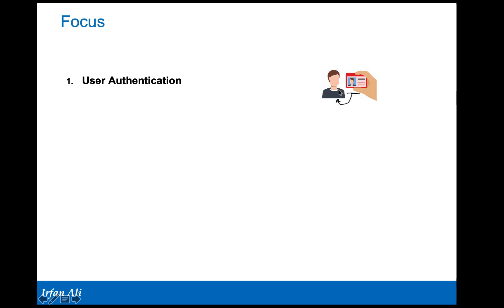For example, you have an ID card which is issued by a school or by the government that identifies you. We will see what proof the mobile needs to provide to the network to show who the mobile really is.